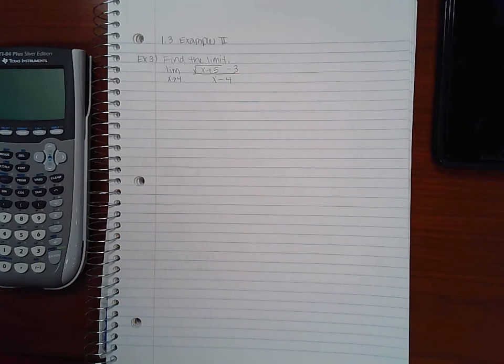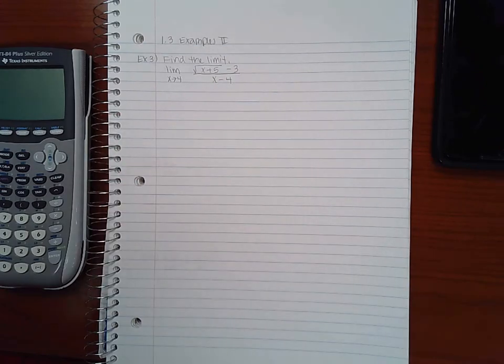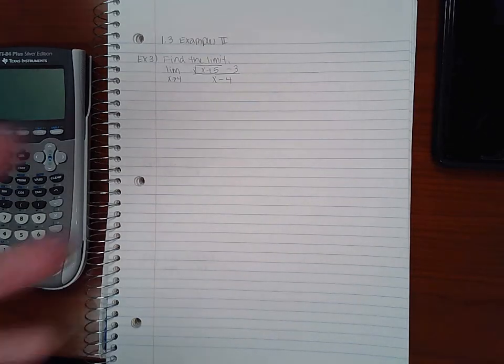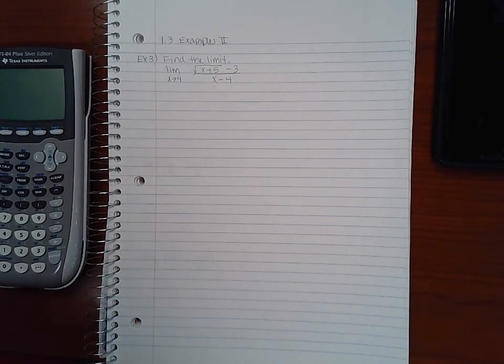Now again, we have the same issue as we did with example 2. We cannot do direct substitution because if I plug a 4 into the denominator, I'll get a 0 in the denominator, which will be an indeterminate form or undefined number. Therefore, in order to evaluate this, I will have to algebraically manipulate it.